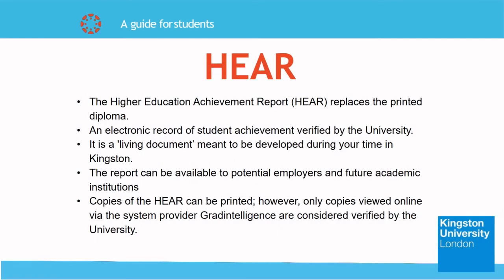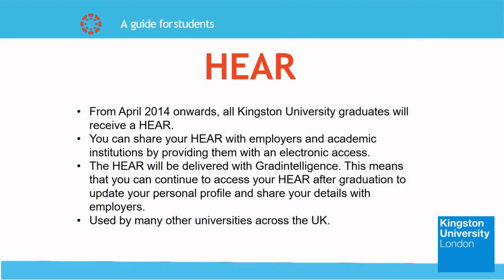Next up we have HEAR — the Higher Education Achievement Report — which replaces the printed diploma supplement. It is an electronic record of student achievements verified by the university. The student's HEAR starts on day one at Kingston University. It is a living document and theirs to develop during their time here. It is possible for students and employers to print copies of the HEAR; however, only copies which are viewed online via the system provider, Grad Intelligence, should be regarded as verified by the university. From April 2014 onwards, all Kingston University graduates will receive a HEAR. You can share your HEAR with employers and academic institutions by providing them with electronic access, allowing them to verify your qualifications quickly and easily.